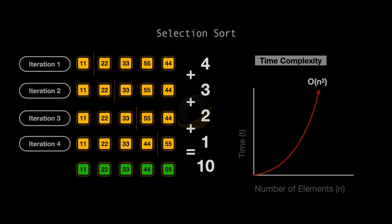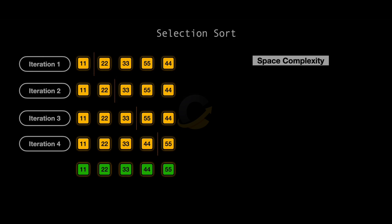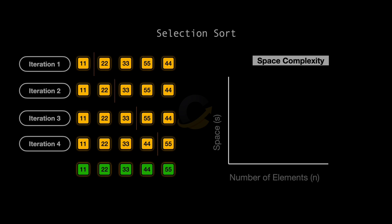This means the time complexity of Selection Sort is O(n²), indicating the time taken grows quadratically with the size of the input. Next, let's look at space complexity, which measures the additional memory the algorithm needs to execute. Selection Sort is an in-place sorting algorithm. This means it rearranges the numbers within the original array and doesn't require any additional storage space apart from a few temporary variables used for swapping. It uses only a small, fixed amount of additional space regardless of the input size. Therefore, the space complexity of Selection Sort is O(1).